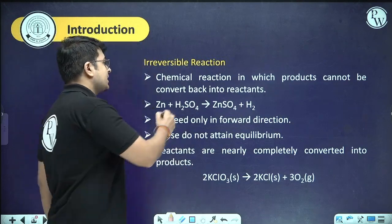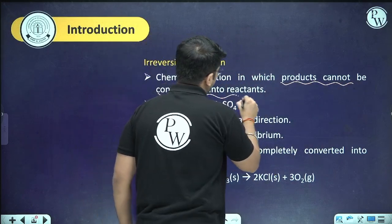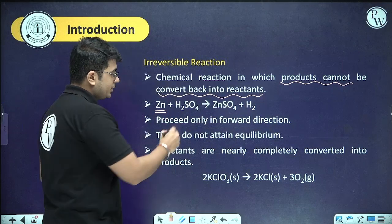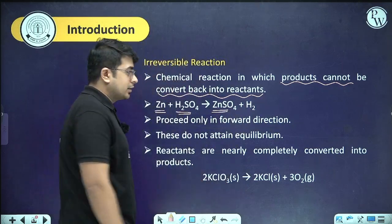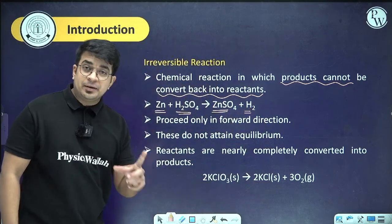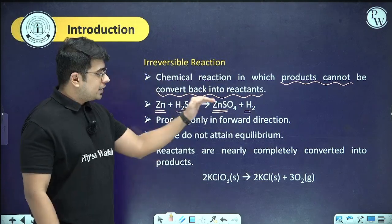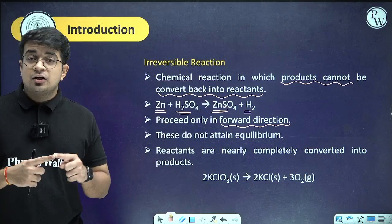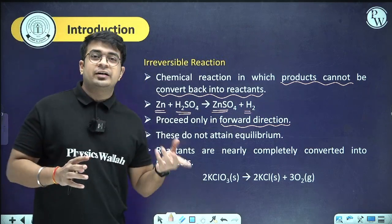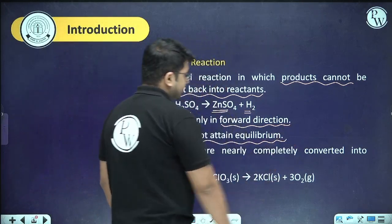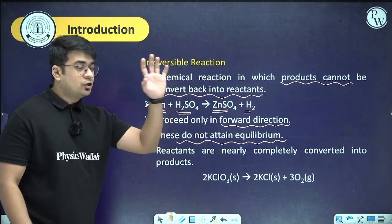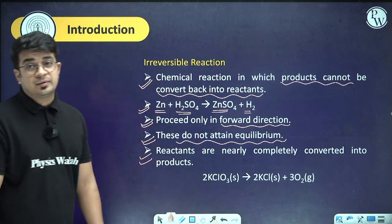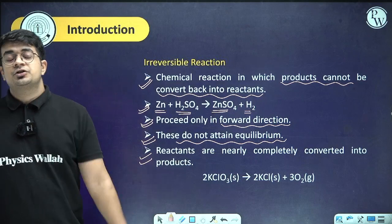In irreversible reactions, products cannot be converted back into reactants — the reaction goes only in the forward direction. For example, adding zinc granules to H₂SO₄ produces ZnSO₄ and H₂, but this reaction never goes back to the reactant side. Since backward reaction doesn't happen, rate of forward and backward reactions are never equal, so no equilibrium is attained, and reactants are nearly or completely converted into products — completion is possible.